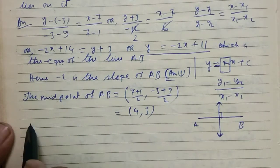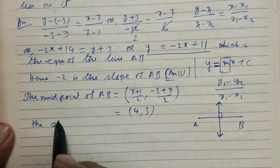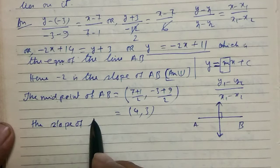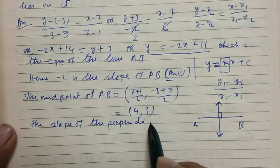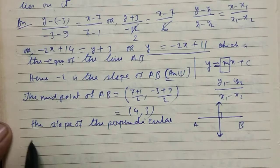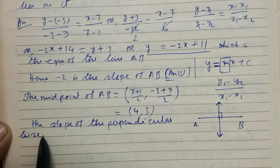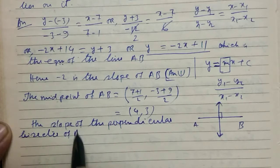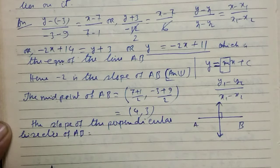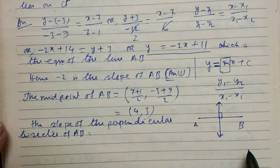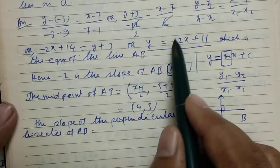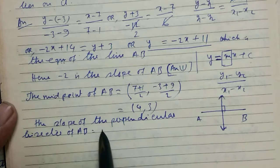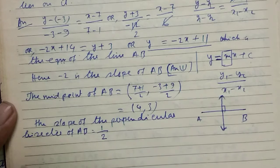Now, the slope of the perpendicular bisector of AB. What is the formula? m1 times m2 equal to minus 1. If this is m1, hence the slope of this perpendicular bisector is equal to -1/m1, that is -1/(-2), it is 1/2.